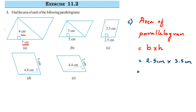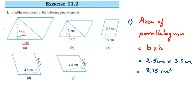To multiply 2.5 and 3.5, it's easier to multiply 25 × 35 = 875, then place the decimal point two digits from the right (one decimal digit from each number), giving 8.75. So the area is 8.75 centimeter square.